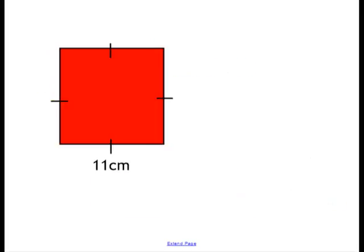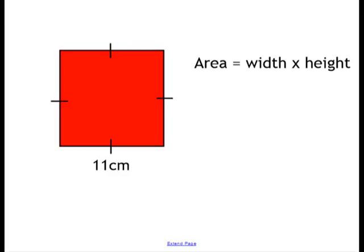Now let's have a look at this shape. Again, it's got a single dash on each side of the shape. That means all four sides are the same length, so we've got a square. So all sides are 11cm. Area is width times height. So if the width is 11, the height is equal to 11. So 11 times 11cm is 121cm squared. The area of my square is 121cm squared.